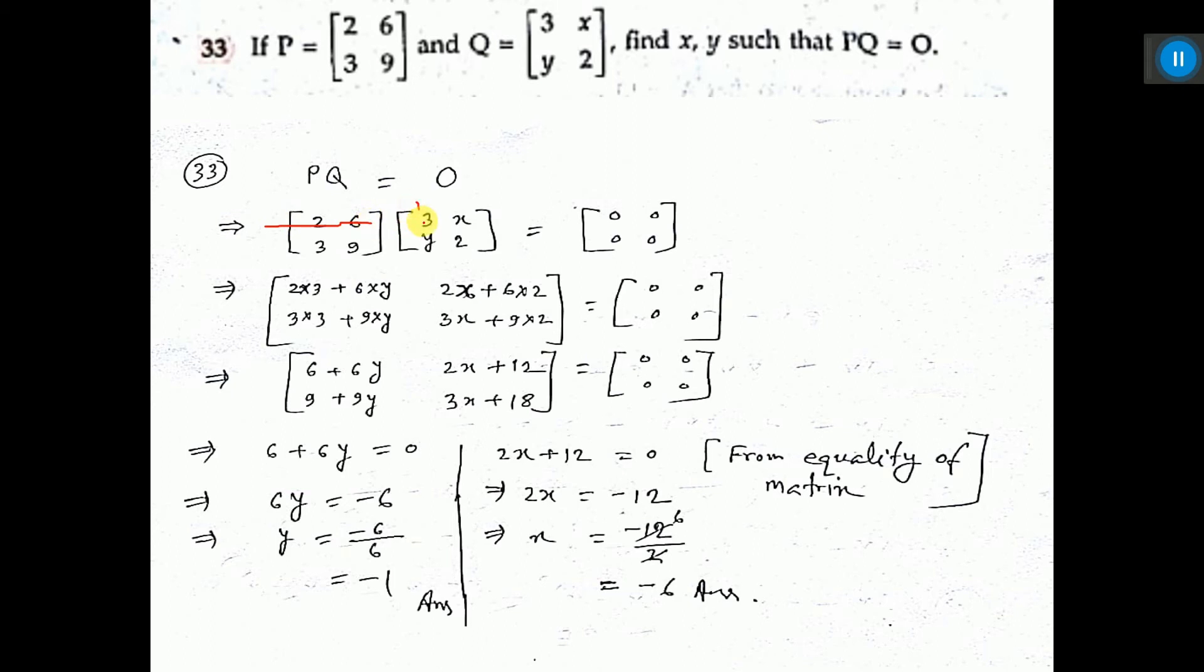So 2 into 3, 6 into Y, and in the middle plus. I have written 2 into 3, 6 into Y with a plus sign in the middle. So I did first row, first column. Now first row, second column.